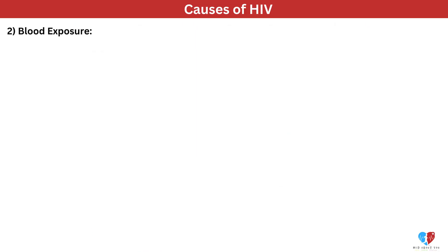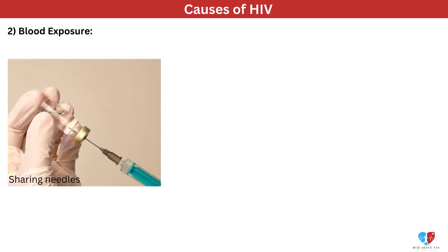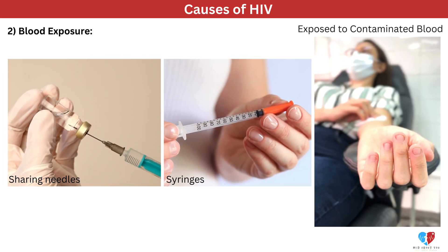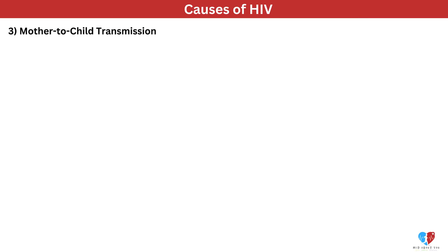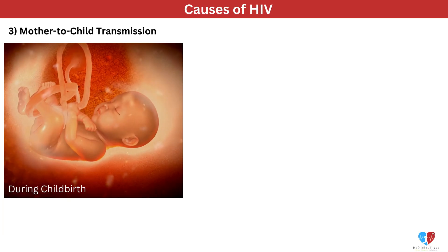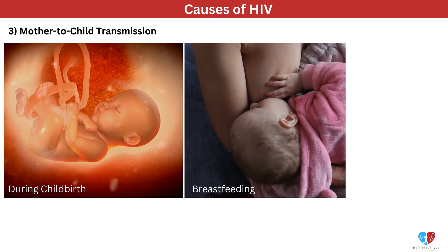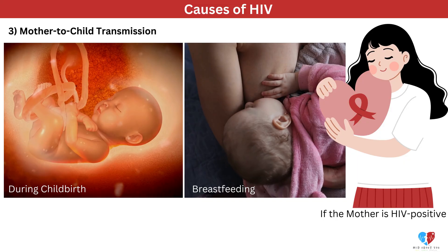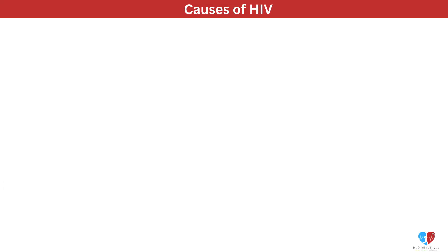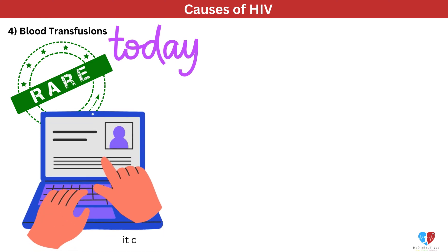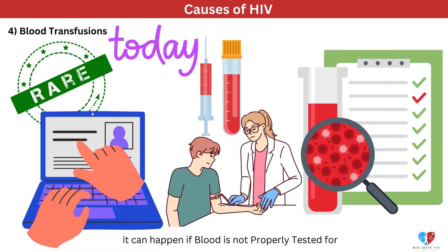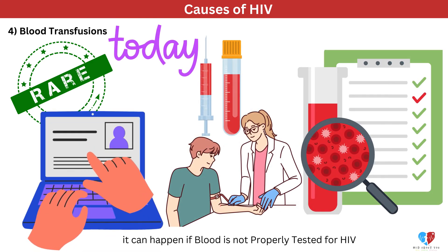2. Blood exposure — sharing needles, syringes, or being exposed to contaminated blood. 3. Mother-to-child transmission — during childbirth or breastfeeding if the mother is HIV positive. 4. Blood transfusions — rare today due to screening, but it can happen if blood is not properly tested for HIV.